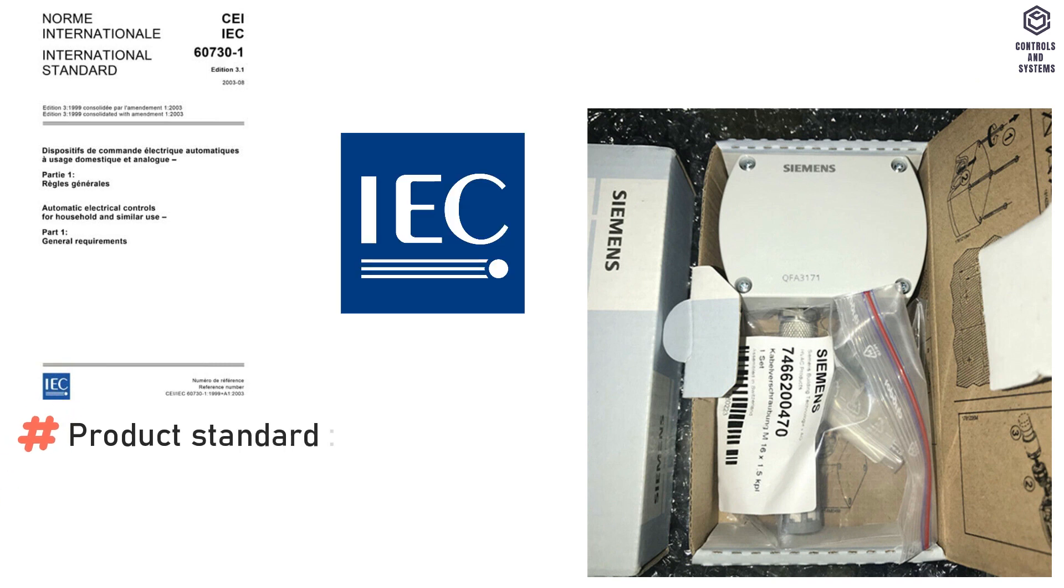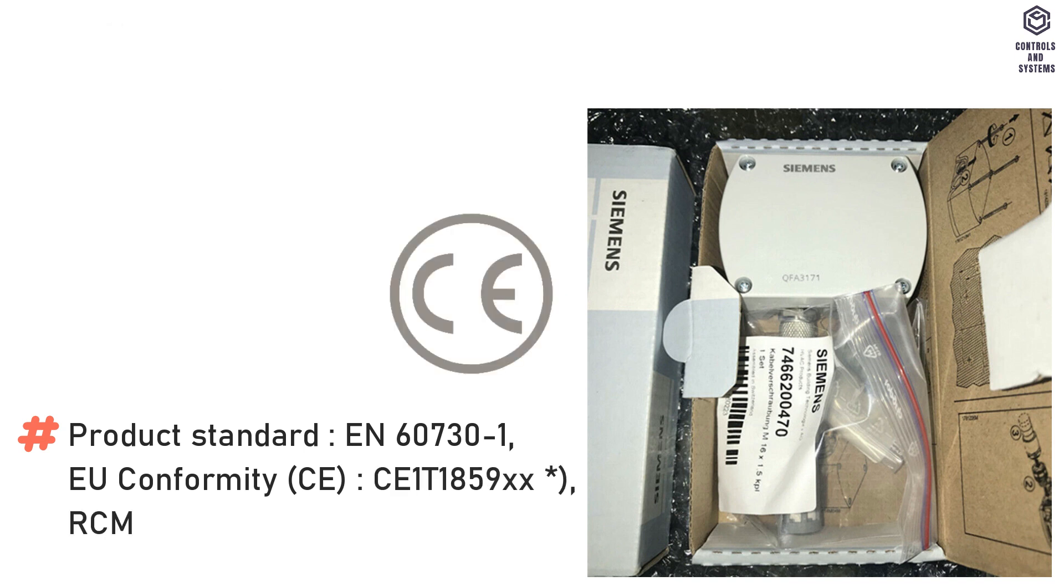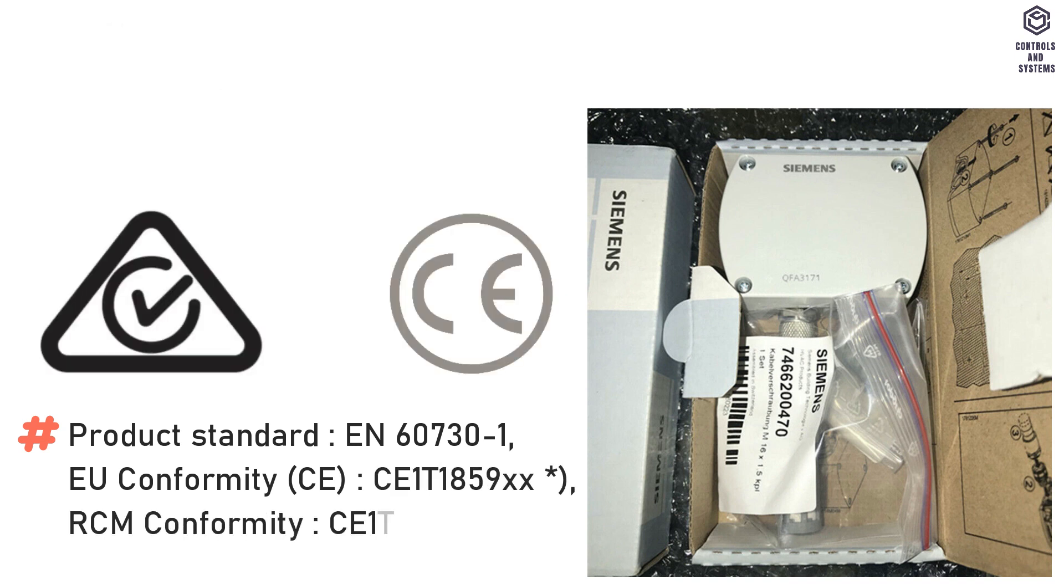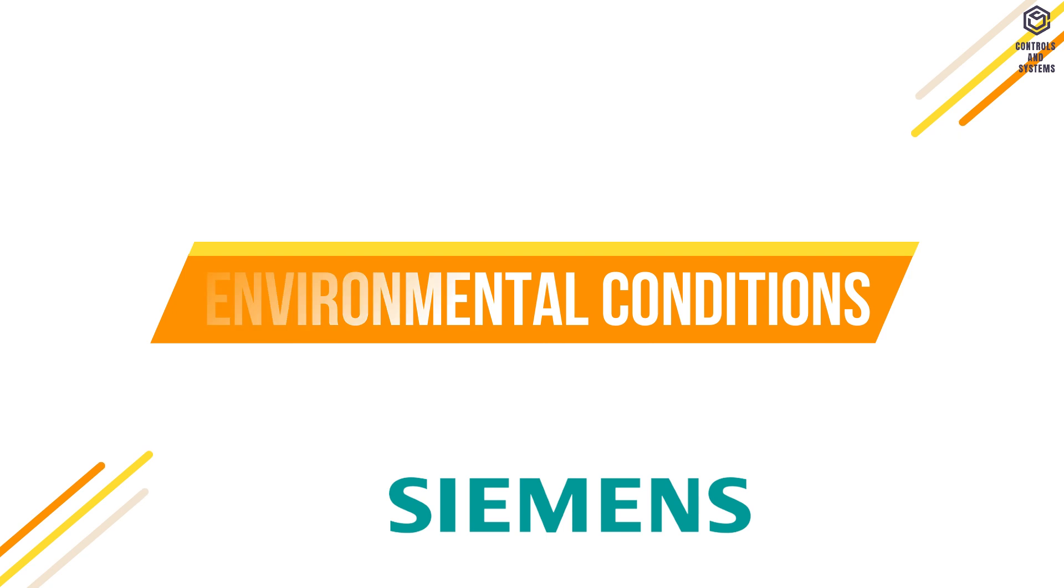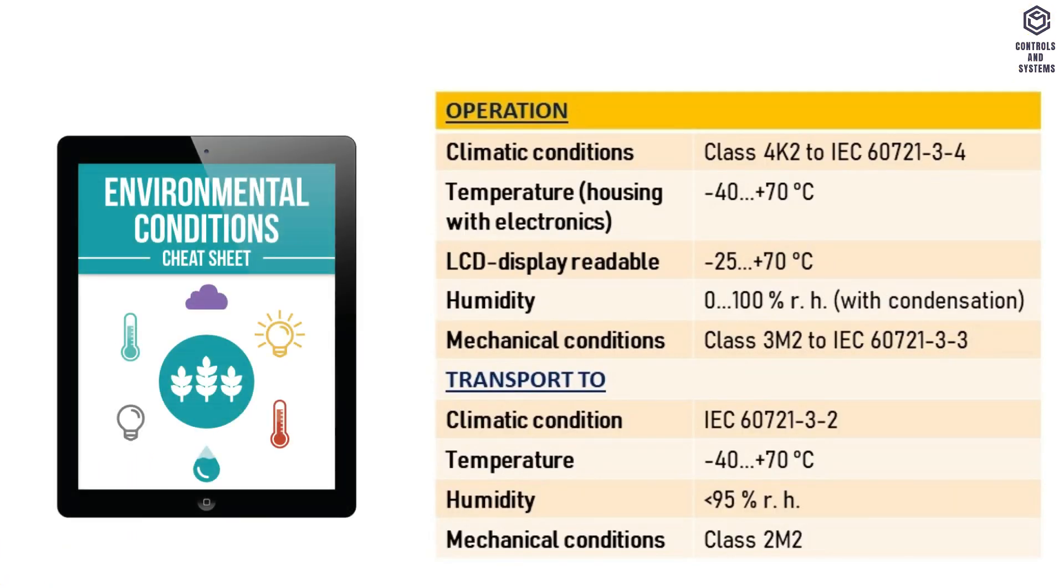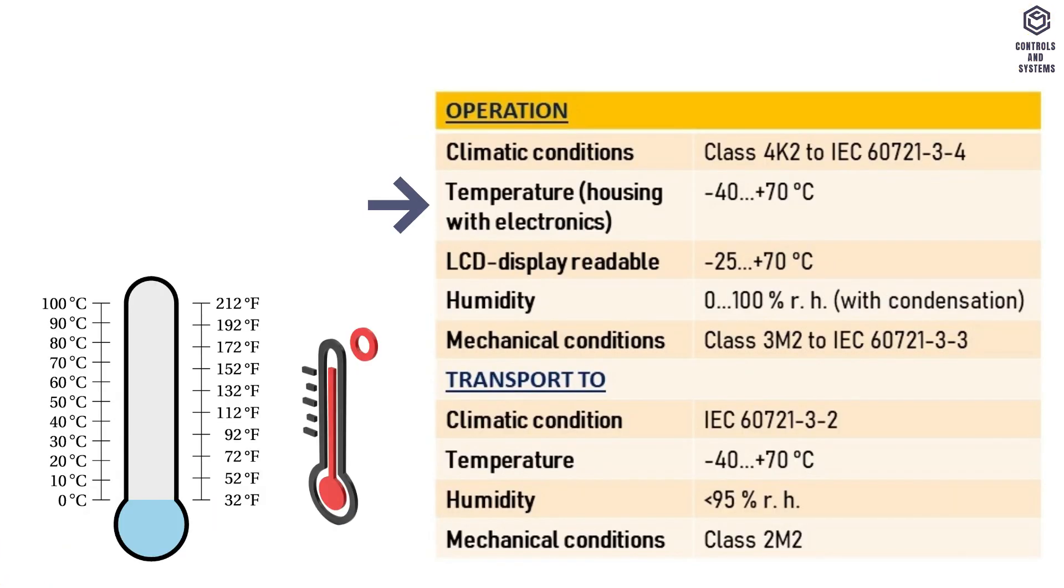Directives and standards. Product standard is EN automatic electrical controls for household and similar use. EU conformity is CE, RCM conformity is CE, UL is UL 873. Environmental conditions. This table indicates the climatic conditions, temperature range, LCD display readable, humidity range, and mechanical conditions during operation.